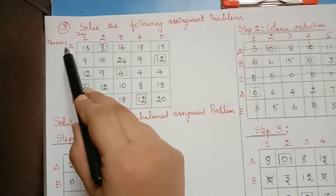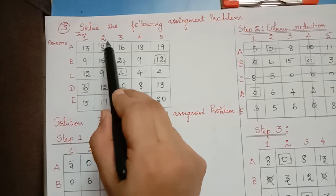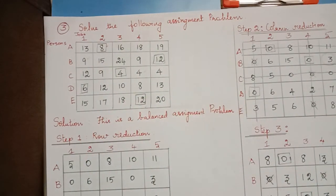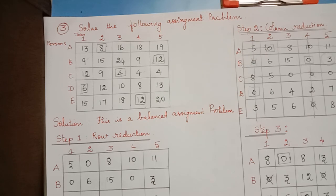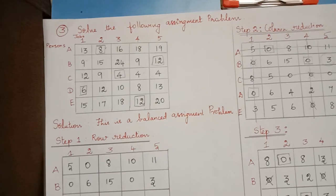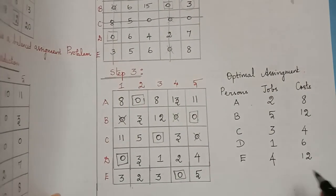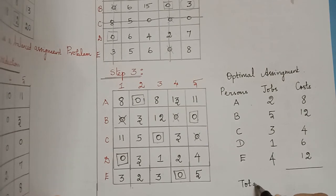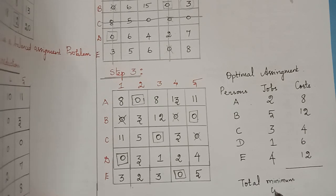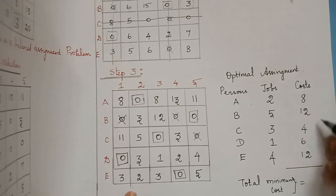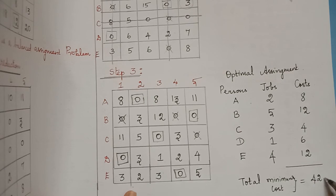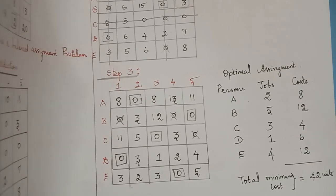Person A assigned job 2 has a completion cost of 8 units. Person B assigned job 5 has a cost of 12 units. Person C assigned job 3 has a cost of 4 units. Person D assigned job 1 has a cost of 6 units. Person E assigned job 4 — after writing all costs we add them to get the total optimum cost. The total minimum cost is 42 units. Hope you have understood this problem. Thank you, everyone.